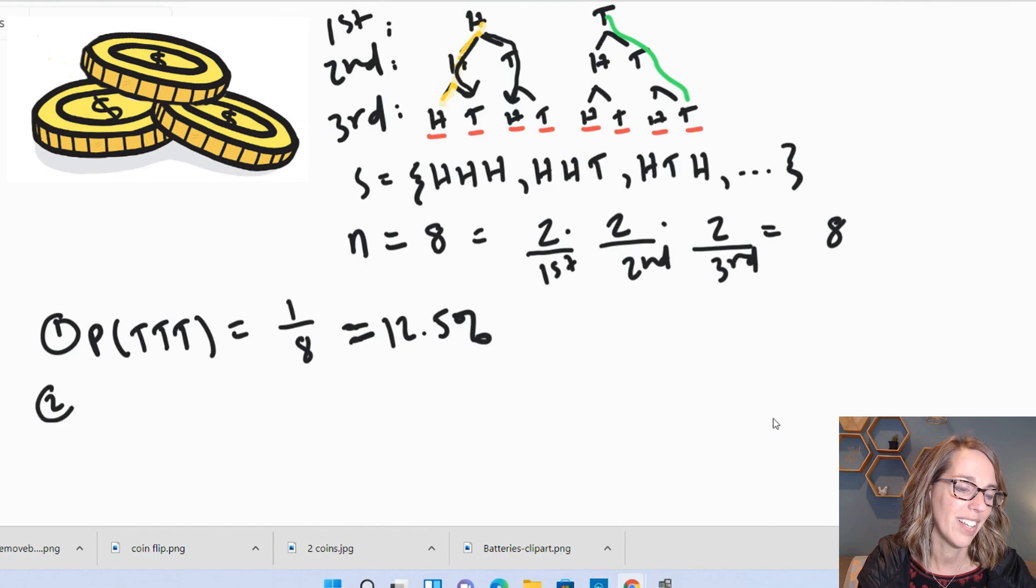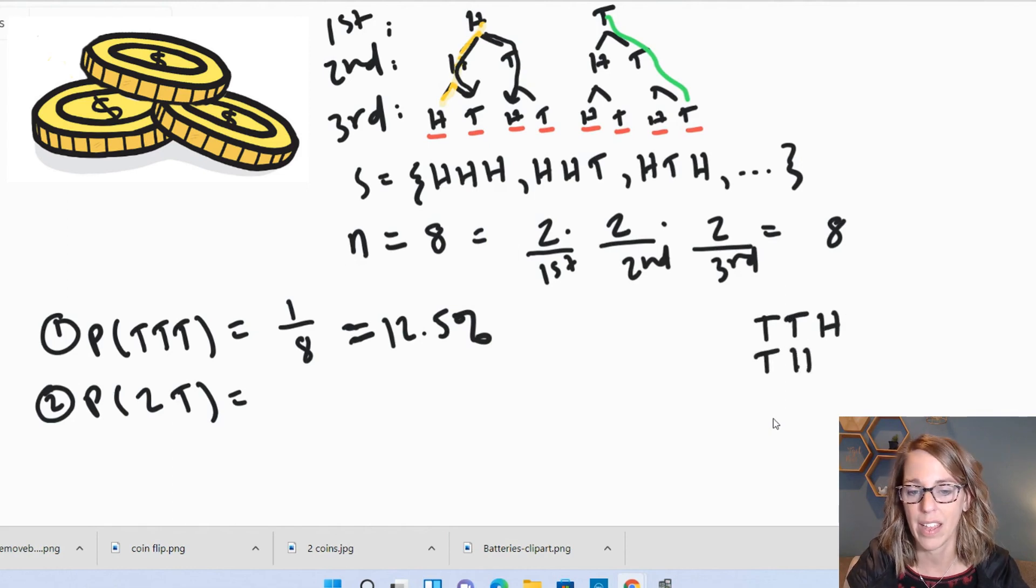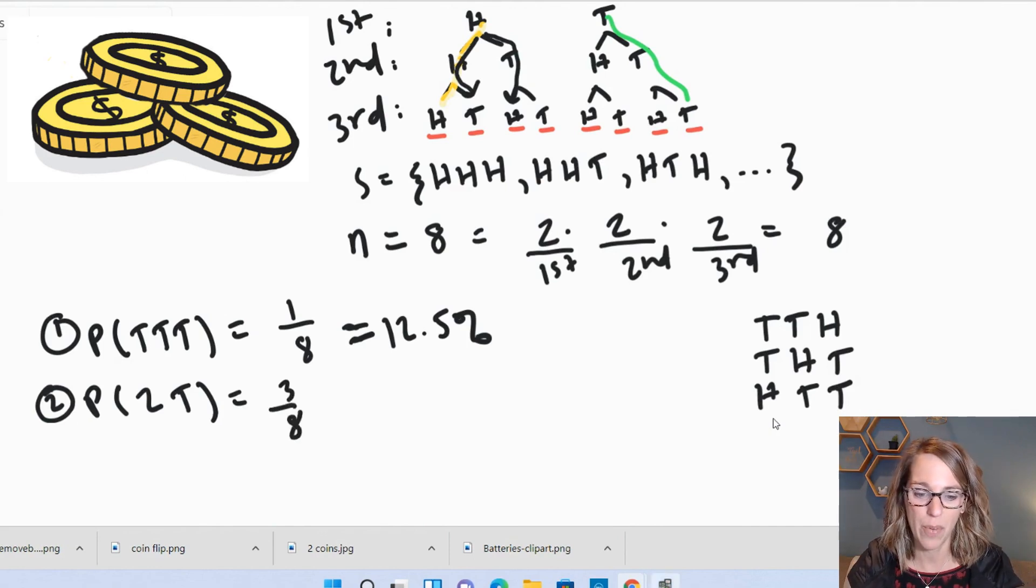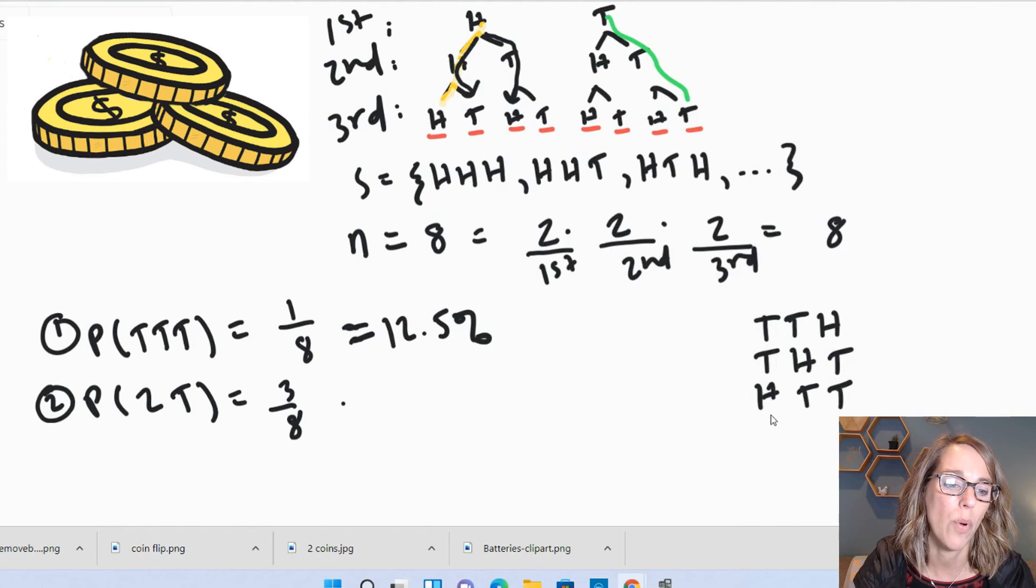Number two, let's say the probability of getting two tails. So I can get my tails in a couple of different places. I can go through my tree diagram and find those, or I can go ahead and build what it might look like. I can get the two tails in the first two positions, followed by heads. I can get tail and then heads and then tail, or I can get heads and then tail and then tail. There's no other way to put two of them together. So I get one, two, three of these. So that's going to be three out of eight. And if I put that one into my calculator, three divided by eight, I get the percentage equivalent, 37.5%.